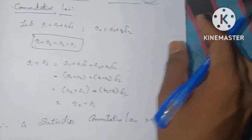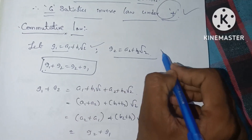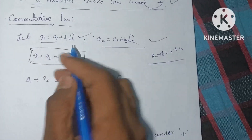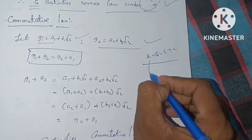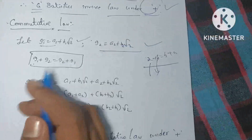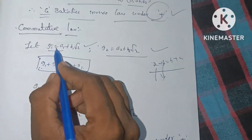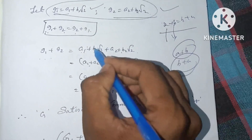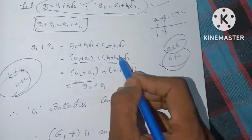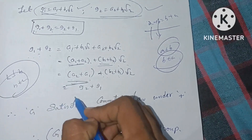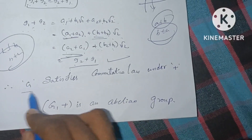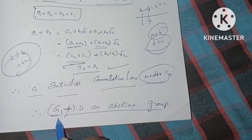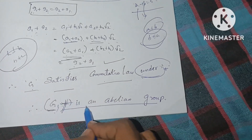The last law is the commutative law. For elements g1 and g2, we need to show g1 plus g2 equals g2 plus g1. Since a1 plus a2 equals a2 plus a1 and b1 plus b2 equals b2 plus b1, we have g1 plus g2 equal to g2 plus g1. Therefore G satisfies the commutative law, and G with respect to addition is an abelian group.